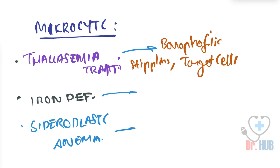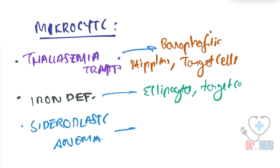In the case of iron deficiency anemia, the peripheral smear shows elliptocytes as well as target cells.